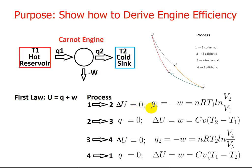Now, by the first law, that means that Q1 is going to be minus W, which is nRT1 times the log of V2 over V1.